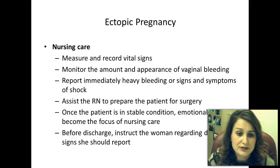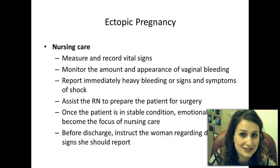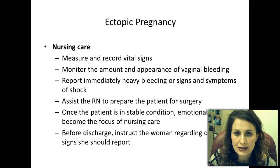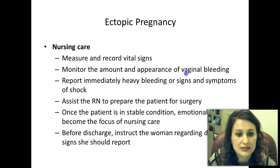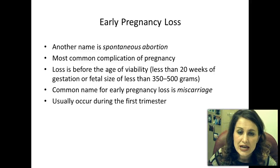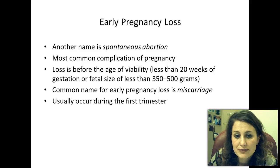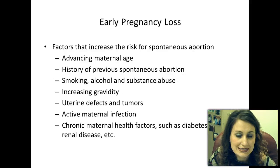Nursing care: measure and record vital signs, monitor the amount and appearance of vaginal bleeding, and report immediately any heavy bleeding or signs and symptoms of shock. Assist the RN to prepare the patient for surgery. Once stable, emotional issues become the focus—she has lost a baby, so refer her to counseling or a grief-share group and be sensitive. Before discharge, instruct the woman regarding danger signs to report. Early pregnancy loss (spontaneous abortion or miscarriage) is the most common complication of pregnancy, occurring before 20 weeks gestation or when the baby is less than 350 to 500 grams. At least 80% occur during the first trimester.